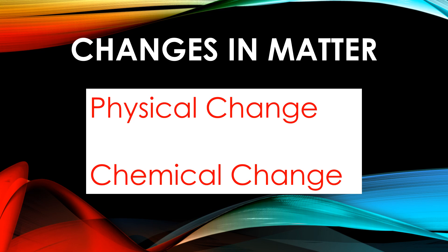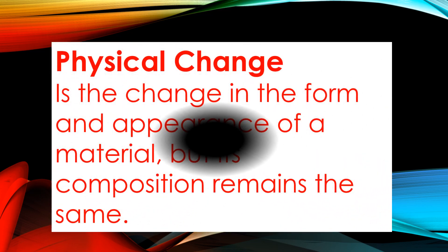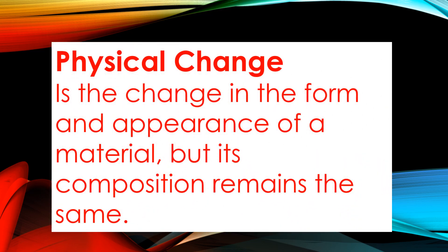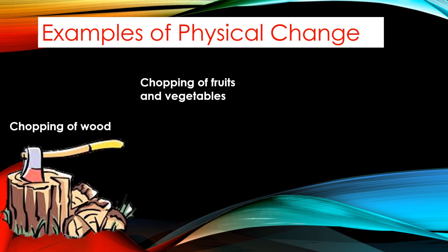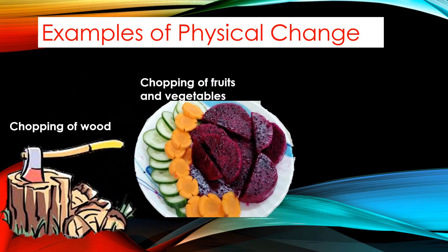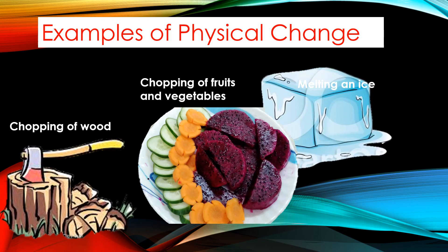Materials undergo changes, and these changes can be categorized into physical change and chemical change. A physical change is the change in the form and appearance of a material, but its composition remains the same. Examples of physical change include chopping of wood, chopping of fruits and vegetables, and melting of ice.